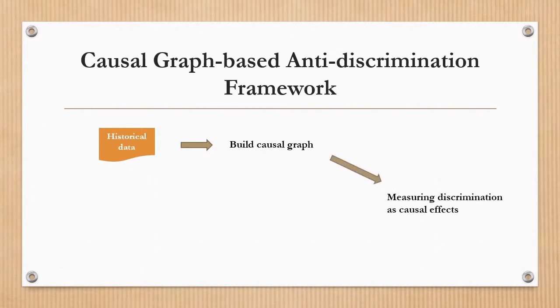After the causal graph is built, discrimination can be measured as causal effects of the protected attribute on the decision. The causal graph is modified to achieve non-discrimination. And finally, the fair data is generated from the fair graph.